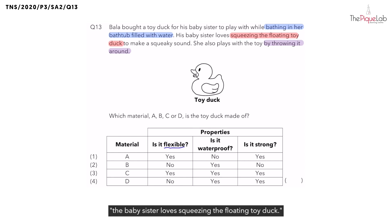The statement is when the baby sister loves squeezing the floating toy duck. Now, think about this. In order to squeeze the toy duck, that means this toy duck must be able to bend. So I'm going to write this out over here. We know that it can bend.